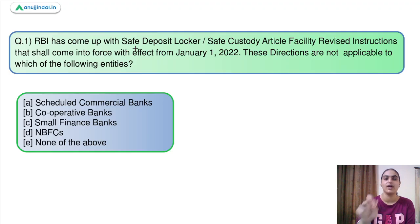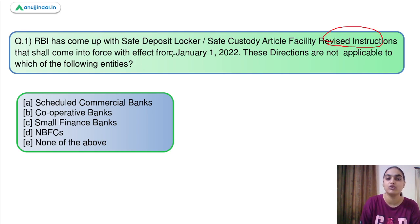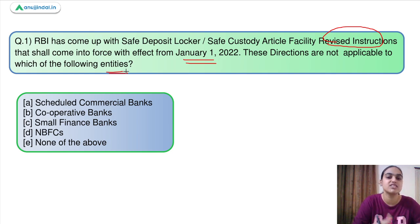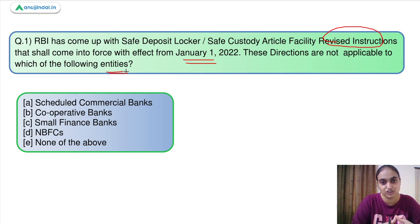Question number one says: RBI has come up with safe deposit locker and safe custody article facility revised instructions, which will come into force from January 1st next year. These directions are not applicable to which of the following entities? RBI has issued instructions about locker management — what rules and regulations need to be followed by you as well as by the banks.